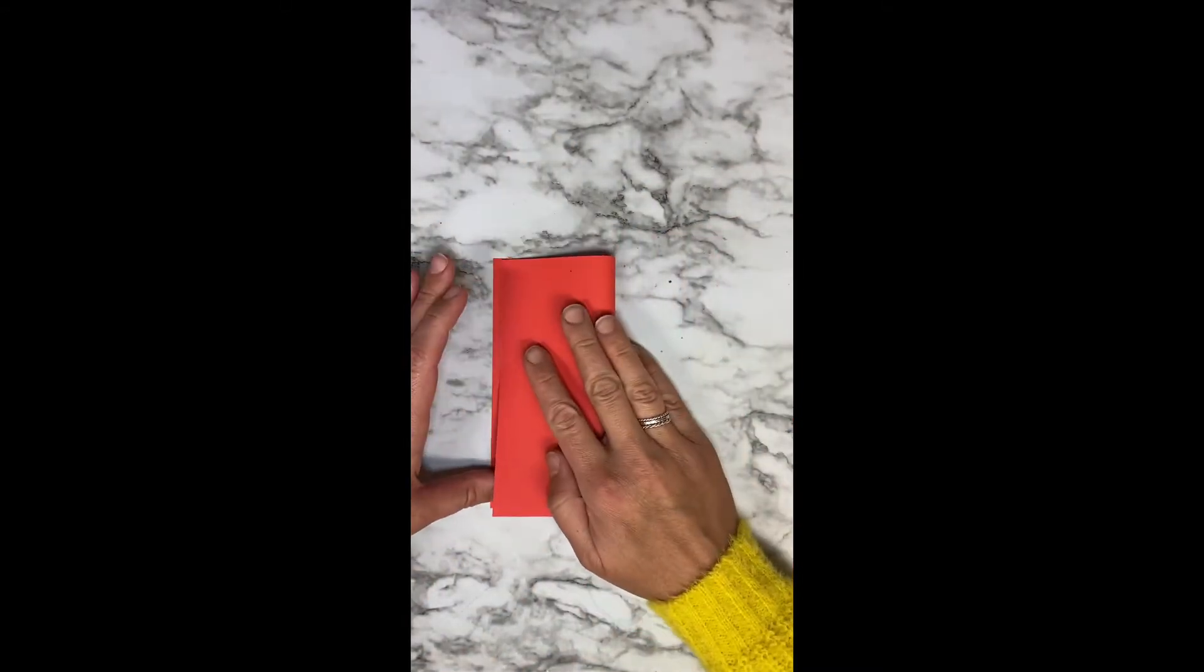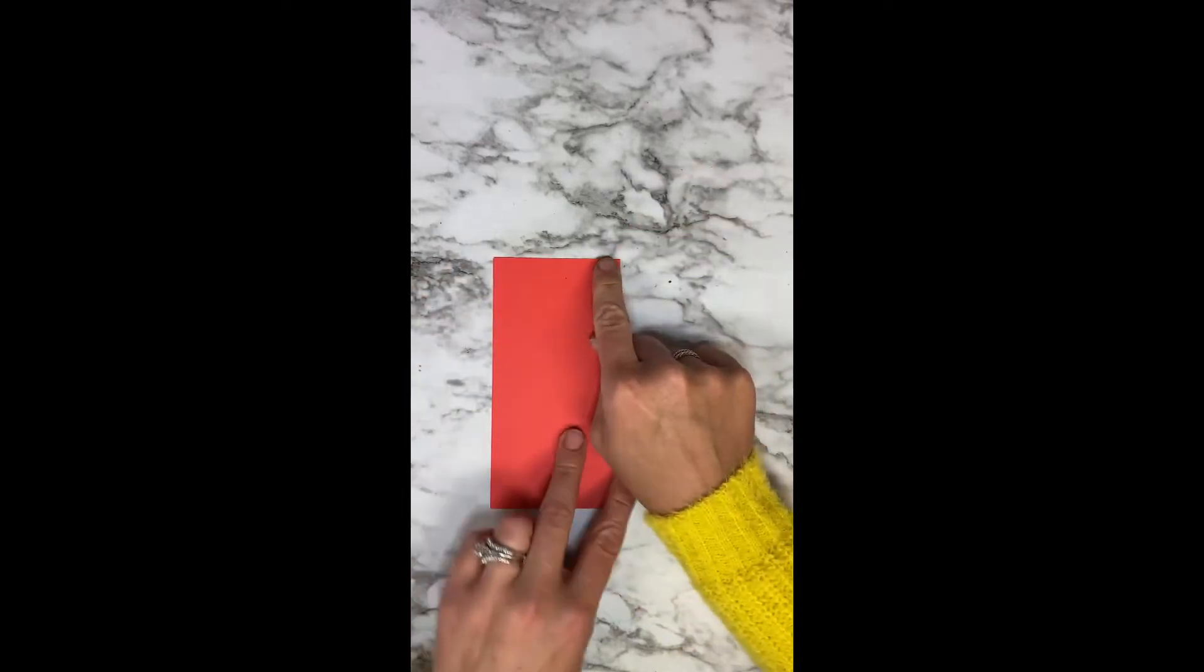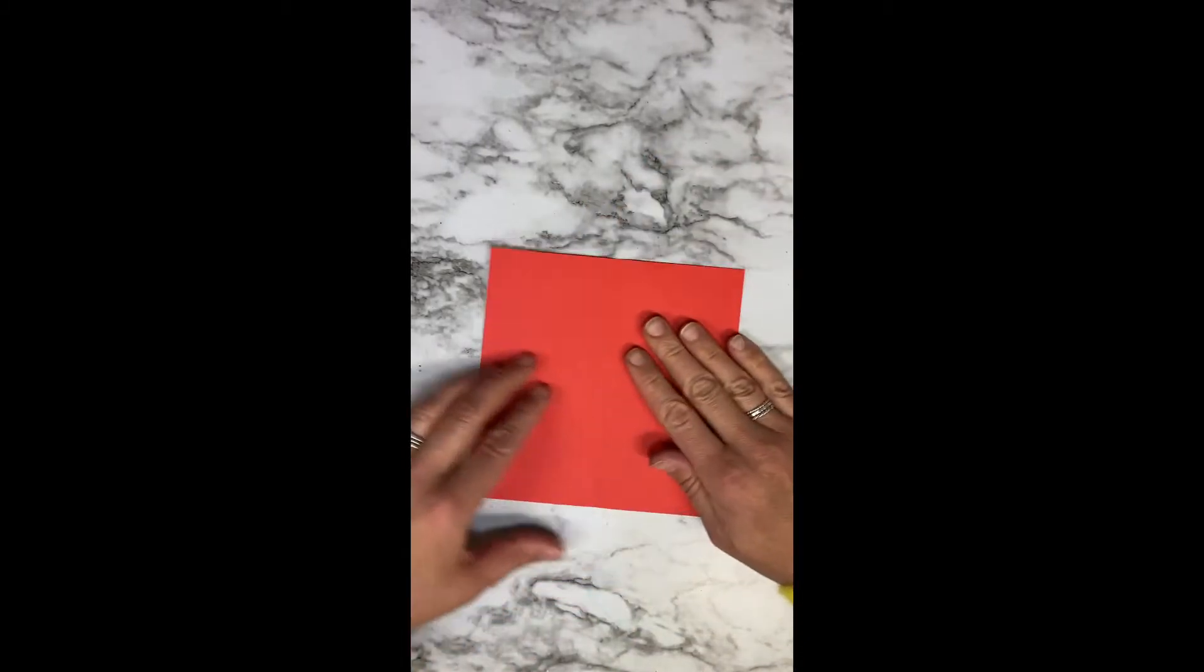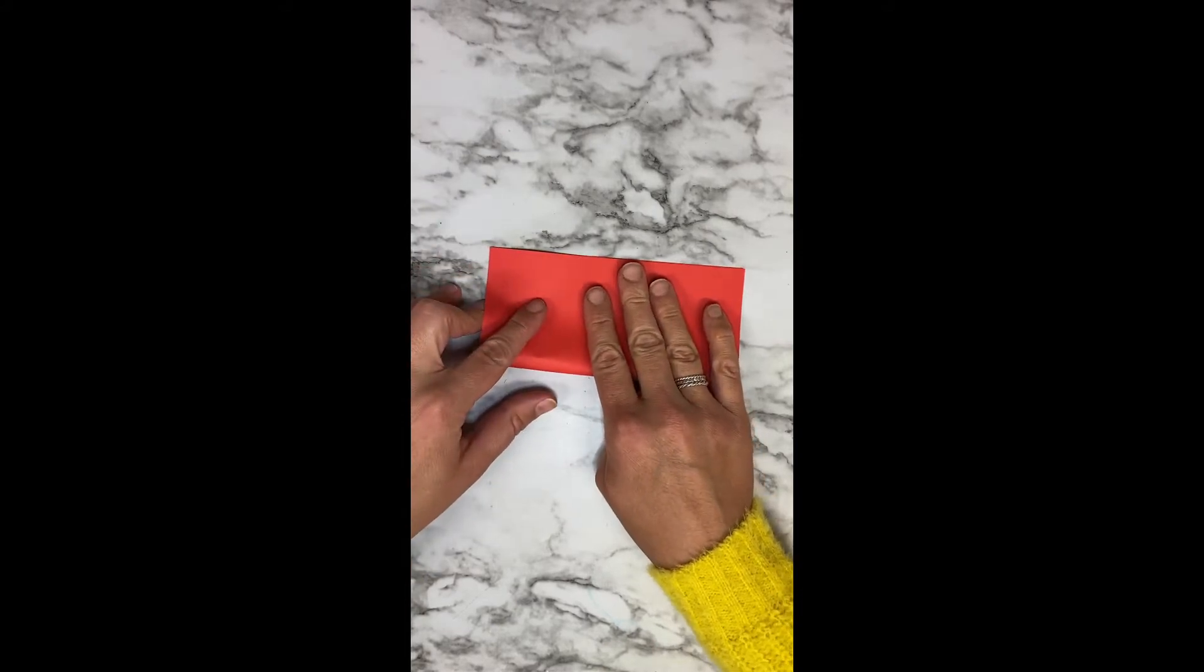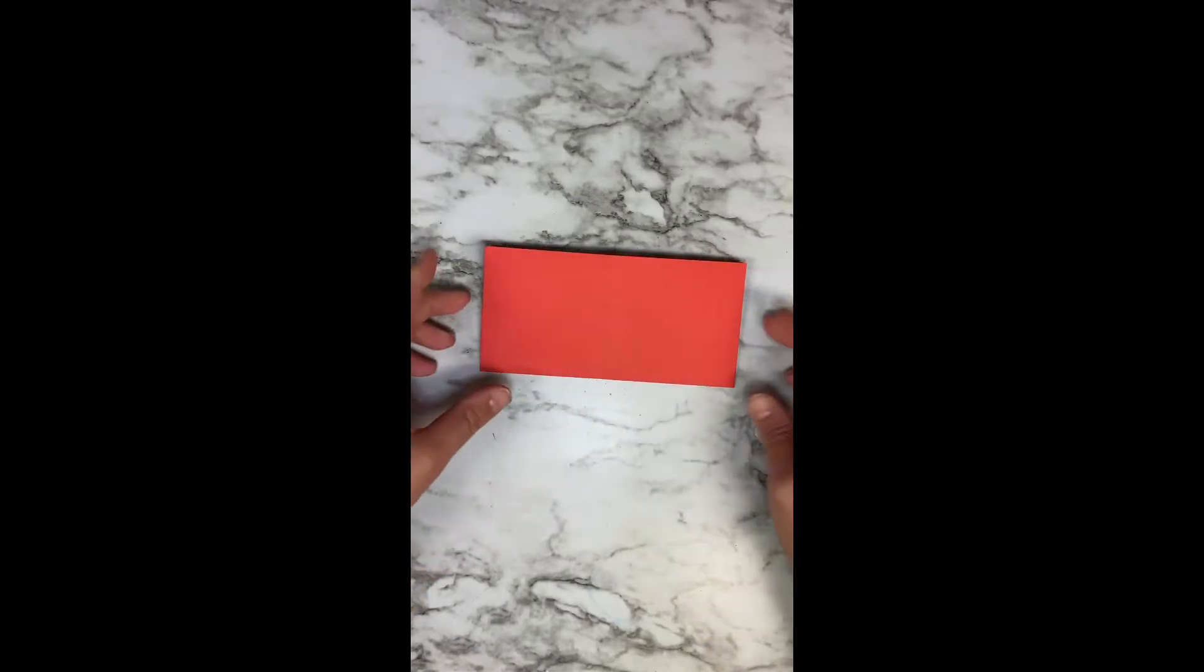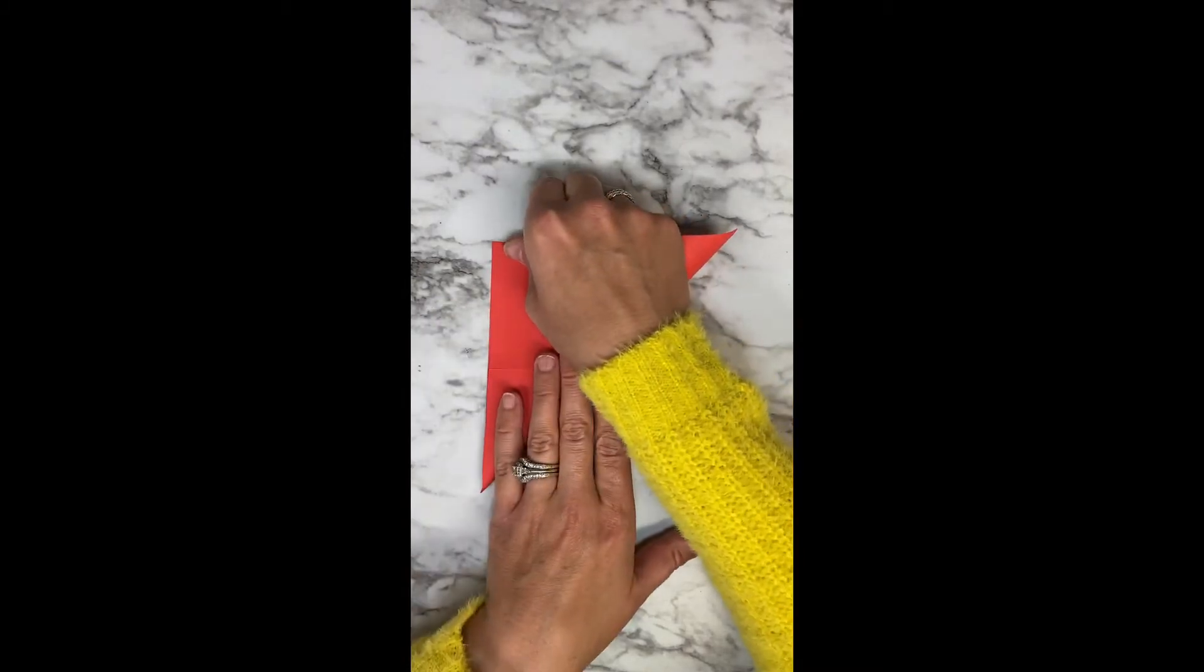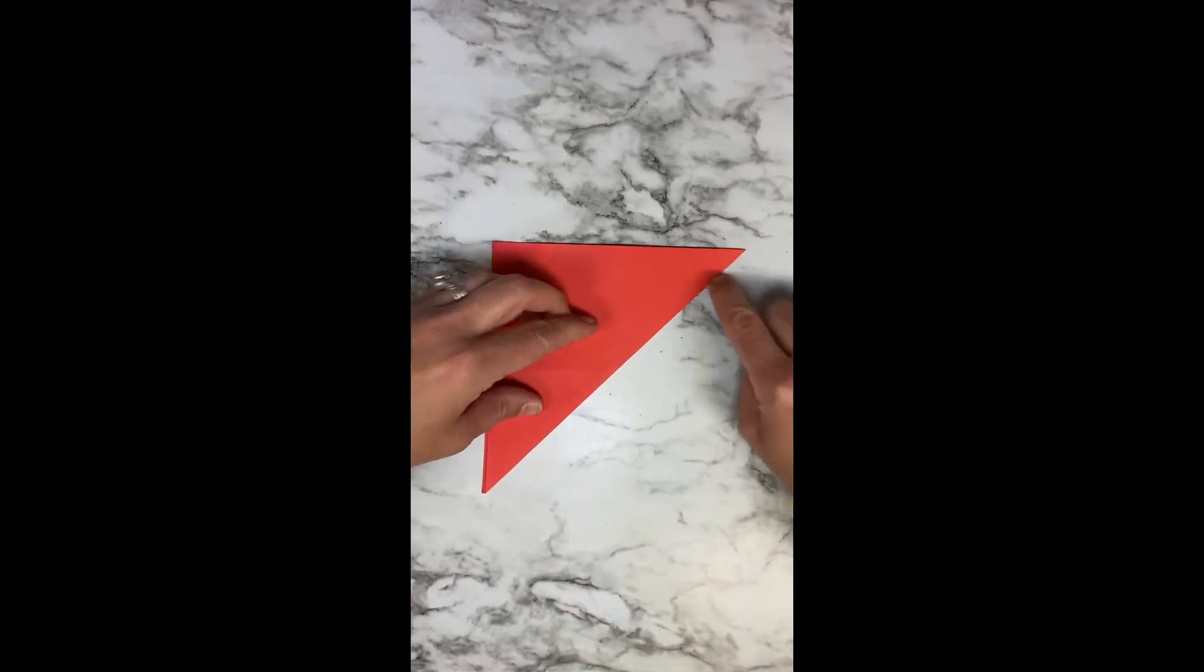So the first step is you want to fold it in half. I tell the kids make sure the edges and corners are even Stevens. You can also use the term kissing. Then you open it and now you're going to fold it in half the other way. So you're basically creating a giant plus sign on your paper. Open it up and the last fold is you want to do corner to corner. You only want to do this on one side, not both.